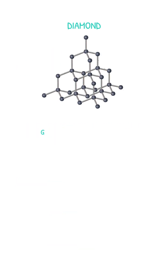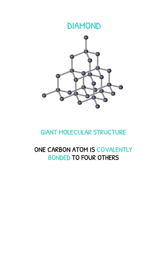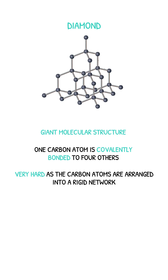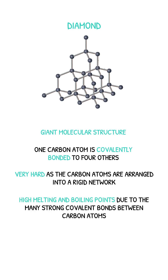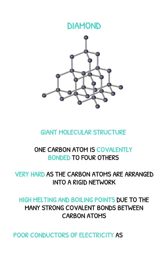Diamond is also a giant molecular structure, where each carbon atom is covalently bonded to four others. Unlike graphene, diamond is a very hard material due to its rigid network of carbon atoms. It has a high melting and boiling point due to its strong covalent bonds, and it's a poor electrical conductor as it contains no freely moving electrons.